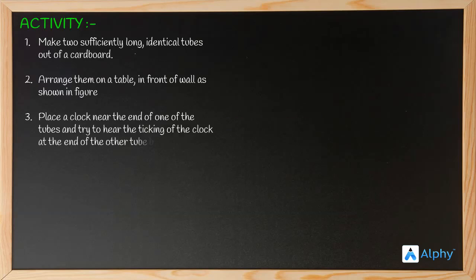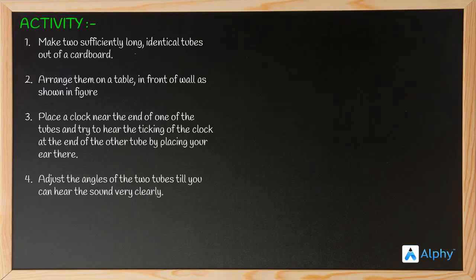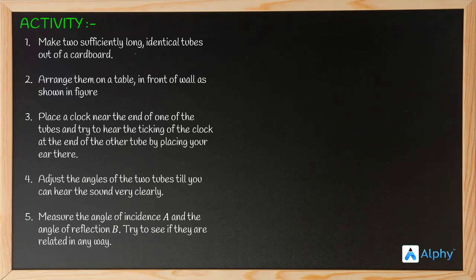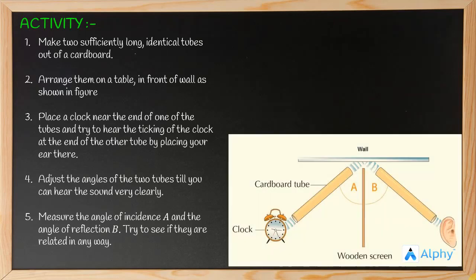Place a clock near one end of a tube and try to hear the ticking of the clock at the end of the other tube by placing your ear there. Adjust the angle of the two tubes till you can hear the sound very clearly and measure the angle of incidence A and angle of reflection B.